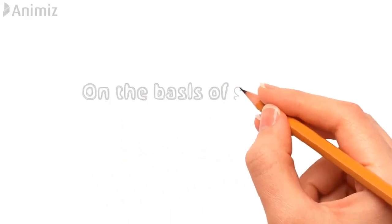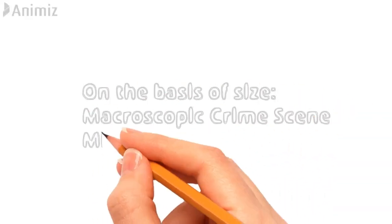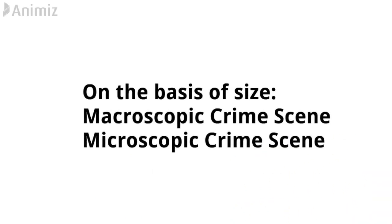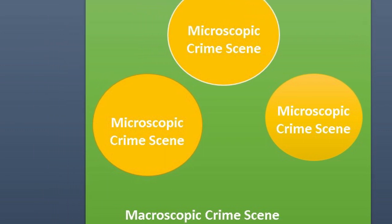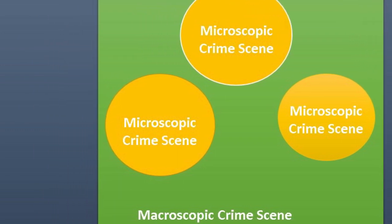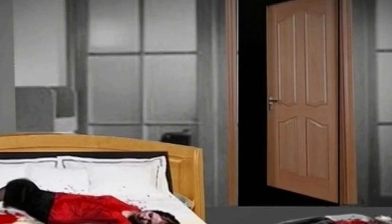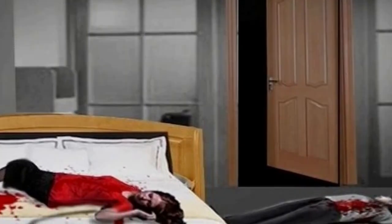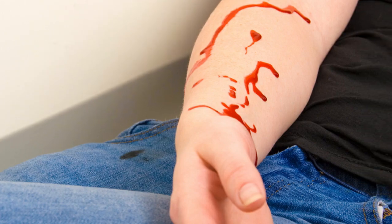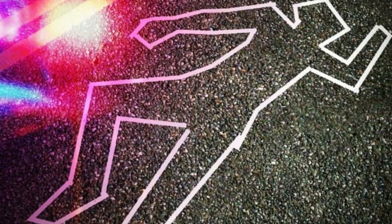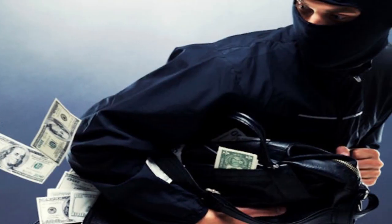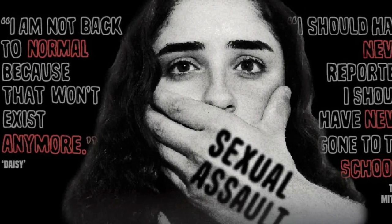Crime scenes can also be macroscopic or microscopic. Microscopic crime scenes are small and exist within a macroscopic crime scene. For example, if a person is killed in a room, the room is the macroscopic crime scene, and the body, wounds on the body, etc. are microscopic crime scenes. Crime scenes can also be categorized based on the type of crime committed — whether it is a case of homicide, robbery, sexual assault, etc.